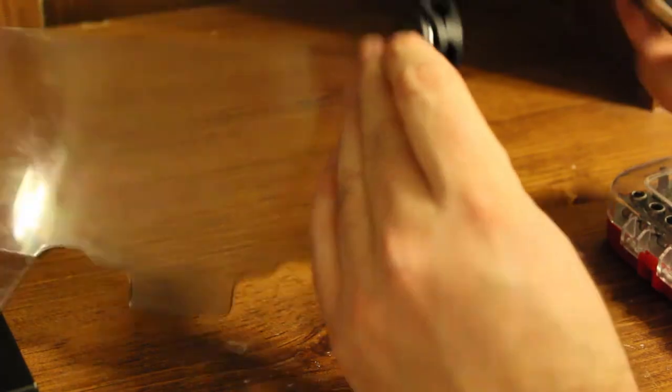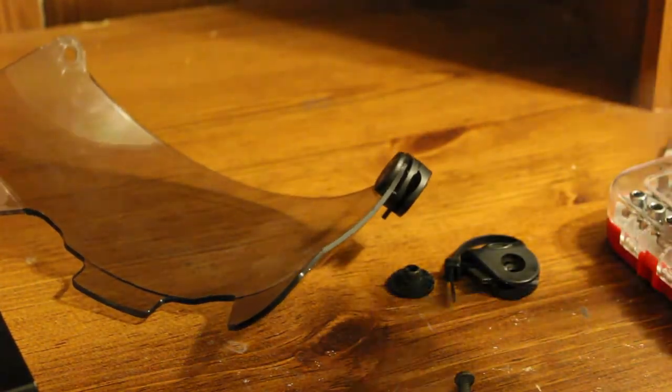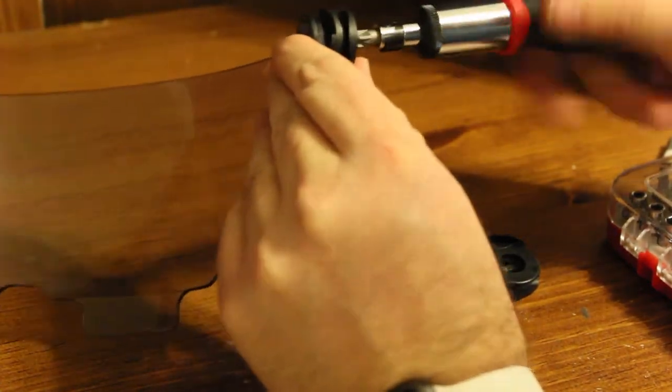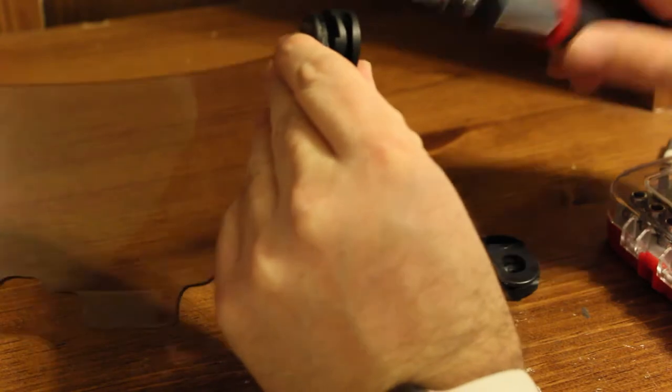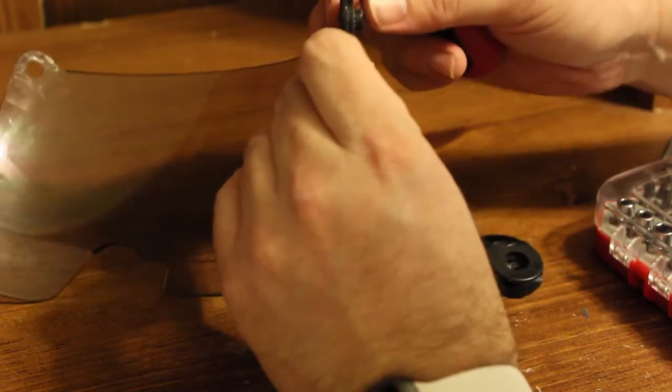Alright, so let's get back to it here. My idea for this is we're going to get these off and we're going to put some Under Armour visor tabs on this because the Under Armour visor tabs are just way easier to use.